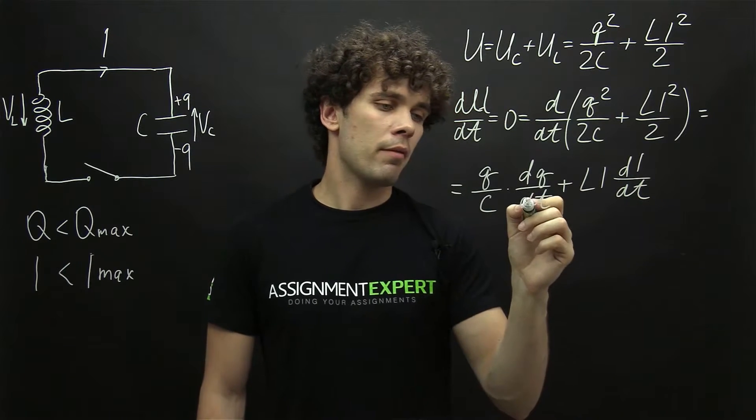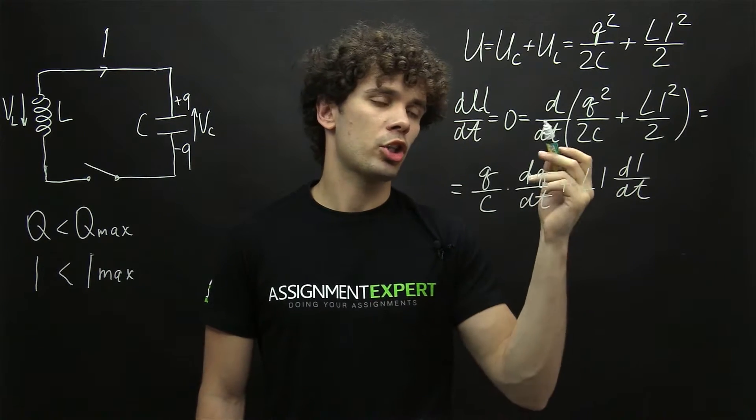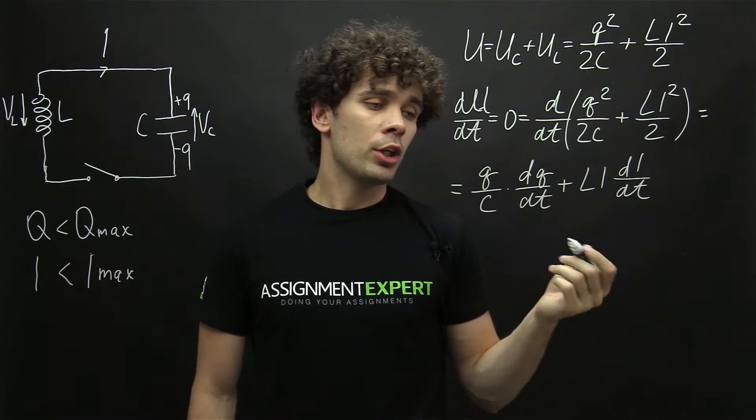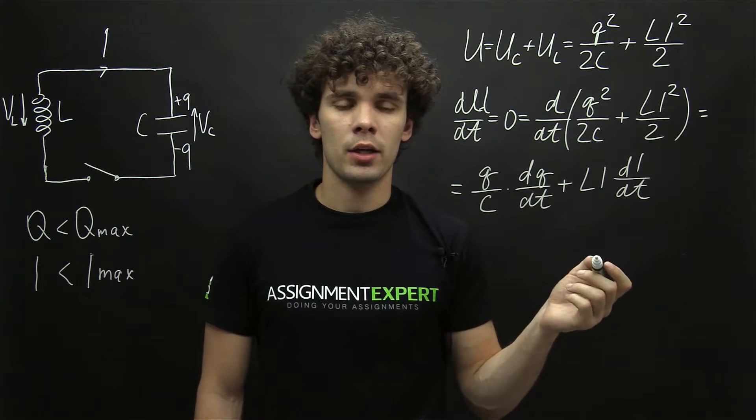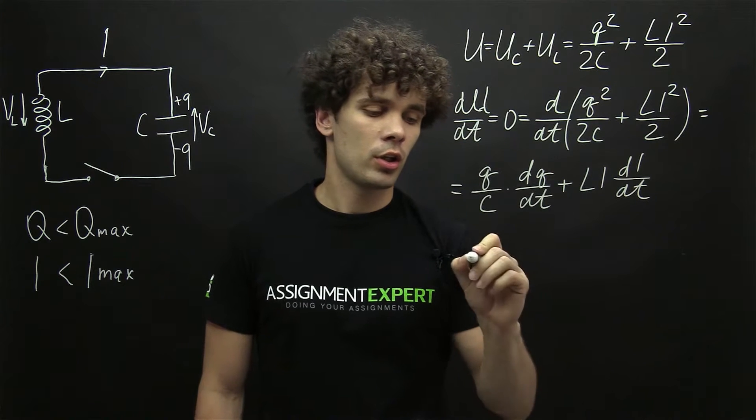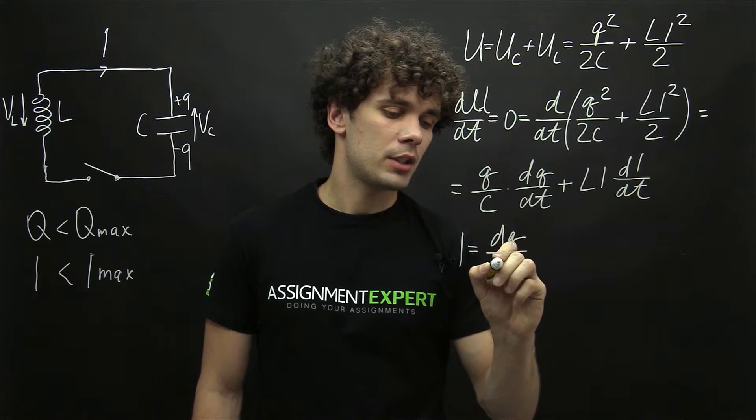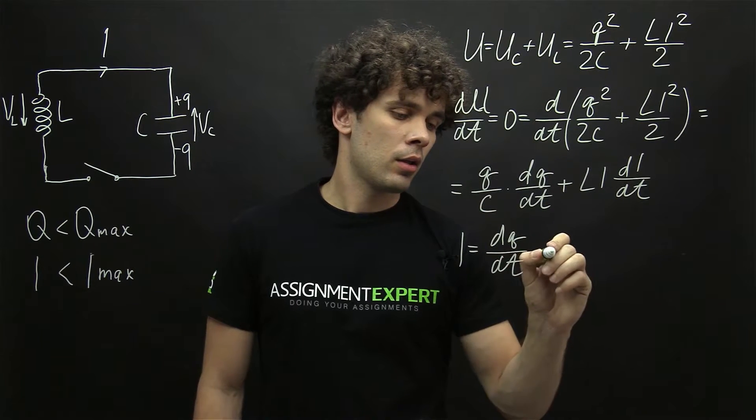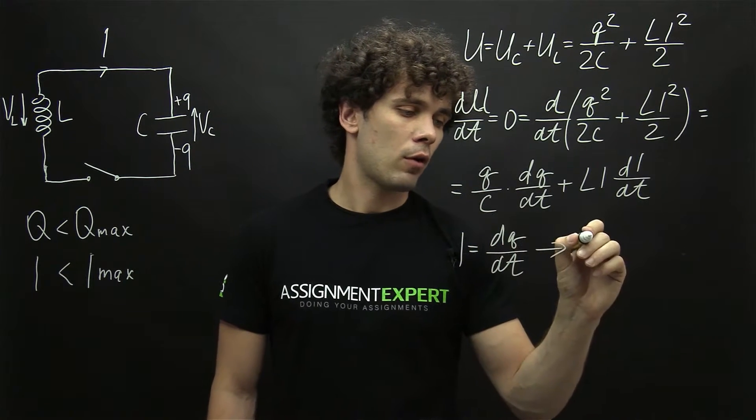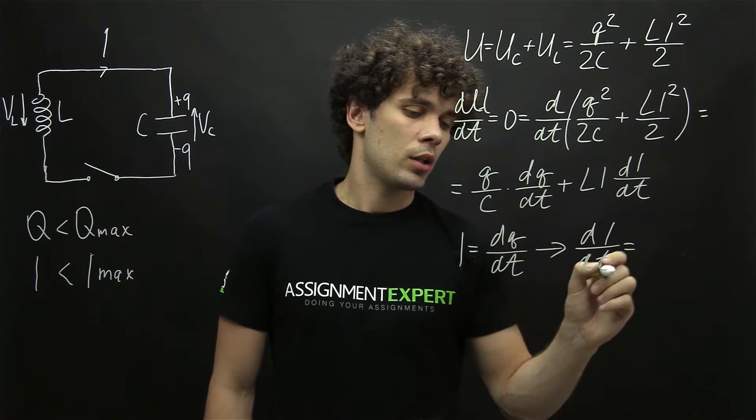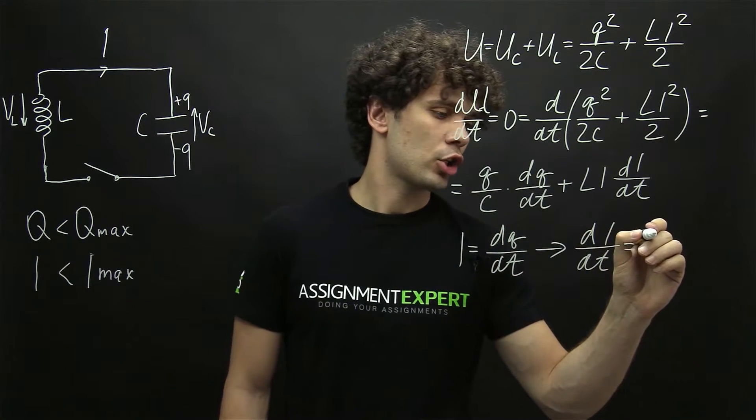We have these two terms because both charge and current depend on the time. So here let's recall that the current I is the rate of change of the charge. So I equals dQ by dt. Therefore derivative of the current di over dt is equal to the second derivative of charge by time.